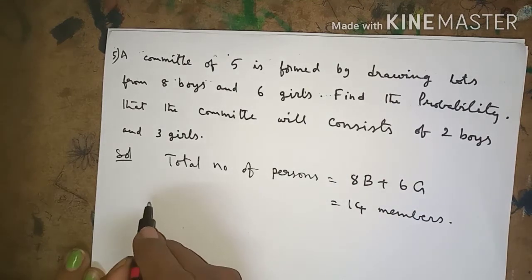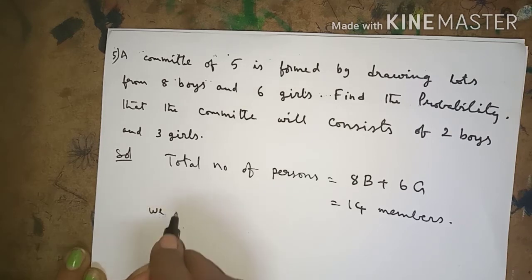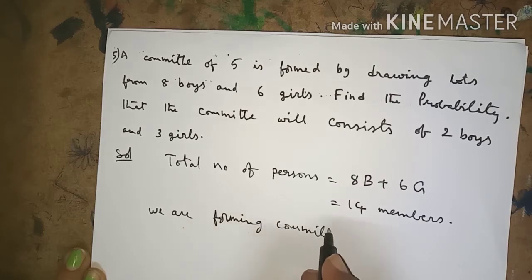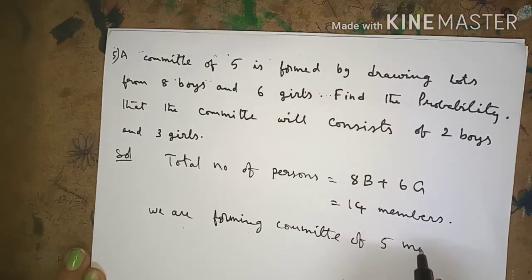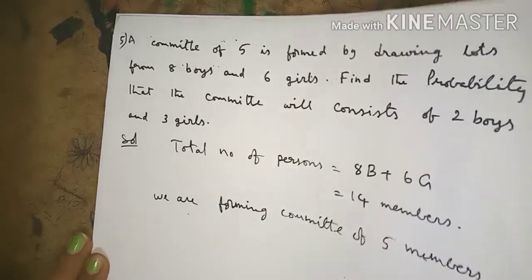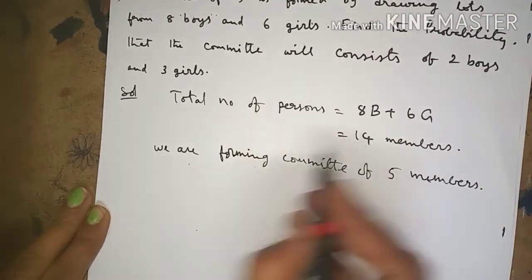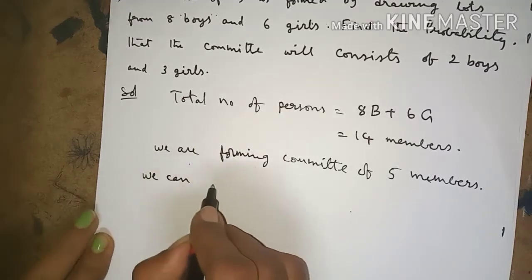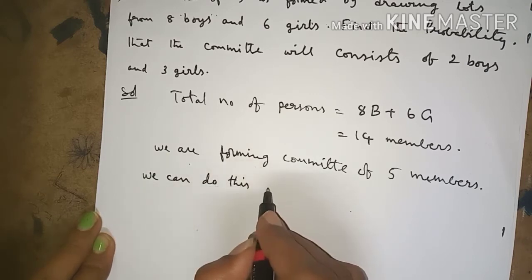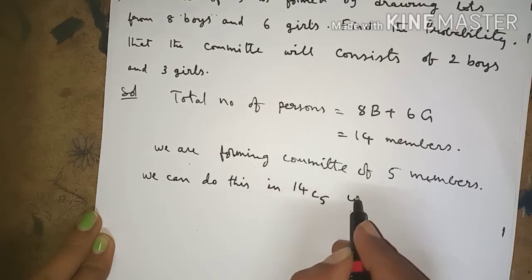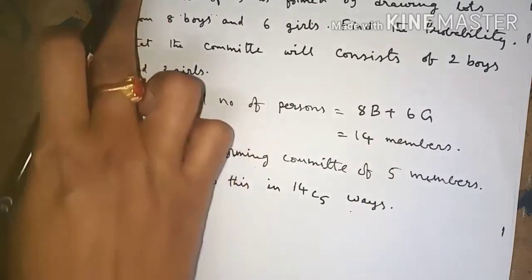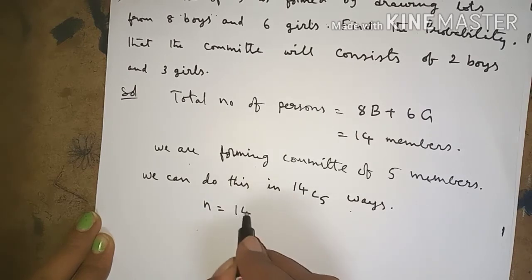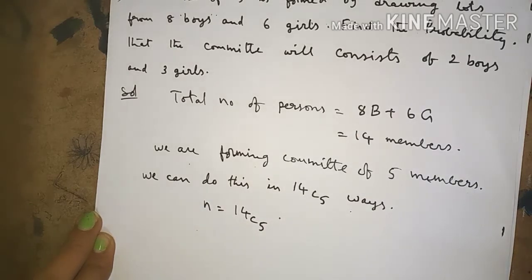We are forming a committee of five members. In how many ways can we form this committee? The total is 14, so we can do this in 14C5 ways. From 14 members we are forming a five-member committee, so the total number of elementary events is 14C5.